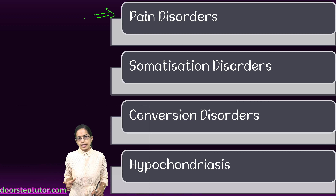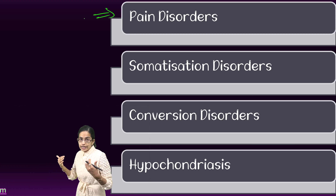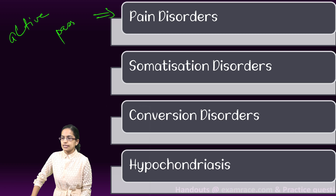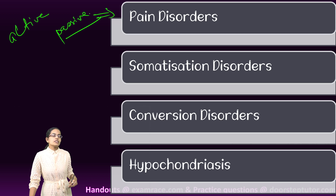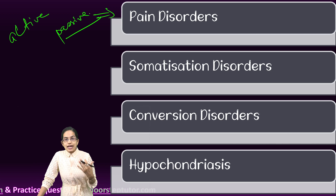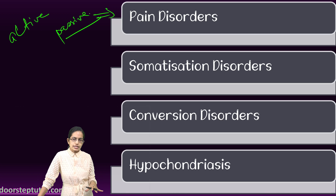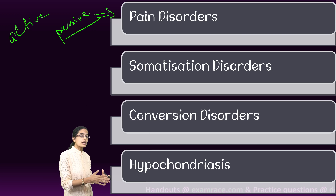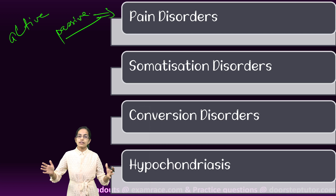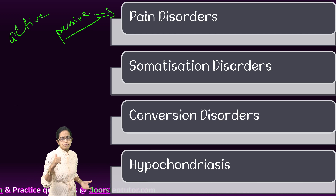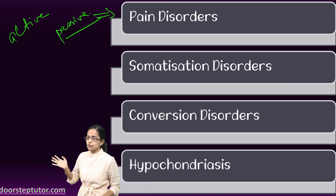To cope with pain disorder, there are two mechanisms. Under active coping, the person continues routine activities and tries to forget the pain. Under passive coping, the person reduces social activity, withdraws socially, keeps themselves aloof, feeling unable to resume normal life — but still tries to keep moving. These represent active and passive coping strategies.